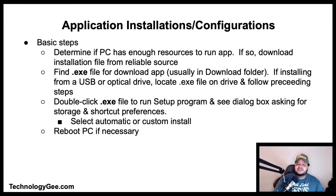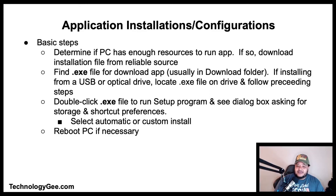When installing and configuring applications, a few basic steps apply to all applications. First, determine if the PC has enough resources to run the application, then download the installation file from a reliable source. Second, find the execution file for the downloaded application — usually in the Downloads folder. If installing from a USB drive or optical drive, locate the execution file on the drive, then double-click it to run the setup program.